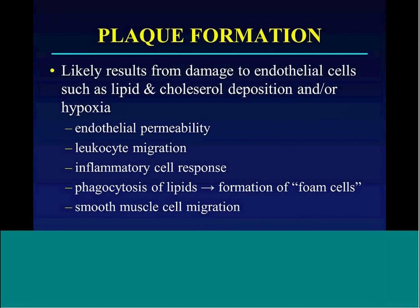Let's talk about how plaque forms. No one knows for sure, but likely plaque formation begins as a result of damage to the endothelial cells — specifically lipid and cholesterol deposition and/or hypoxia. This results in increased permeability of the endothelial lining as well as leukocyte migration, which prompts an inflammatory cell response. The inflammatory cells then phagocytize the lipids and cholesterol in the plaque, resulting in the formation of foam cells. These foam cells tend to be unstable, die, and form a necrotic core, and all of these things result in migration of smooth muscle cells into the vessel wall.